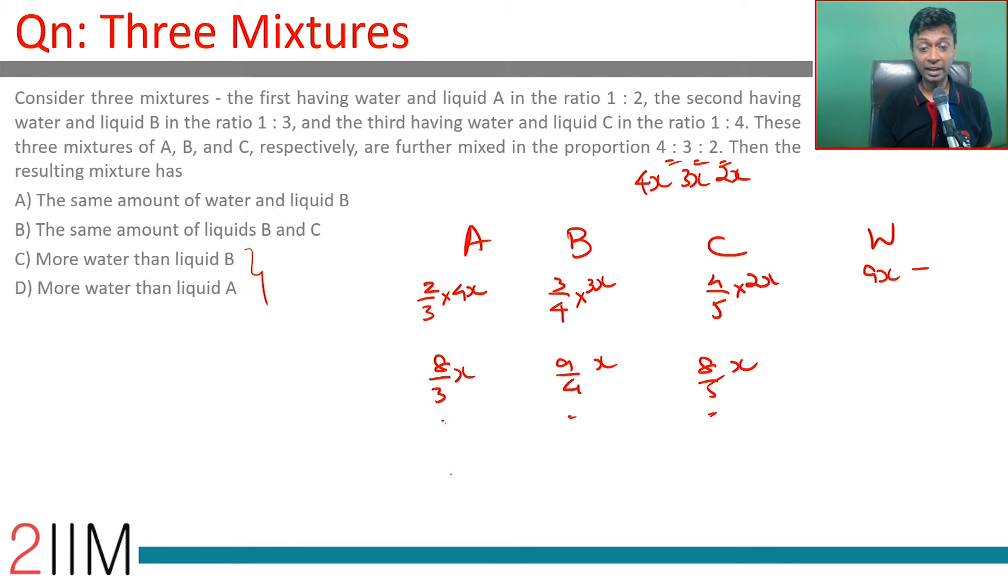This 8 by 3, 9 by 4, 8 by 5 - LCM is 60. 8 by 3: 3 into 20 is 60, 8 into 20 is 160 by 60. 9 into 15: 135 by 60. 8 into 12: 96x by 60. 160 plus 135: 295 plus 96 = 391 by 60.